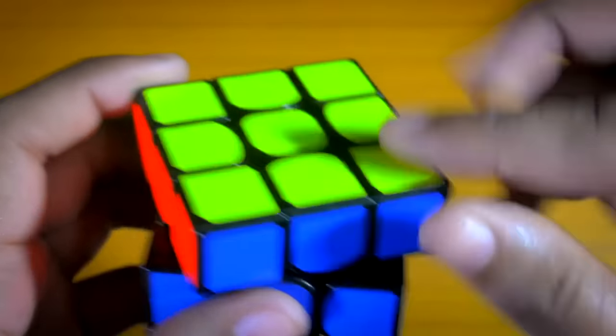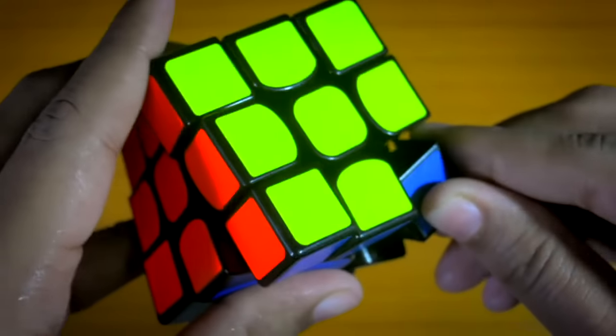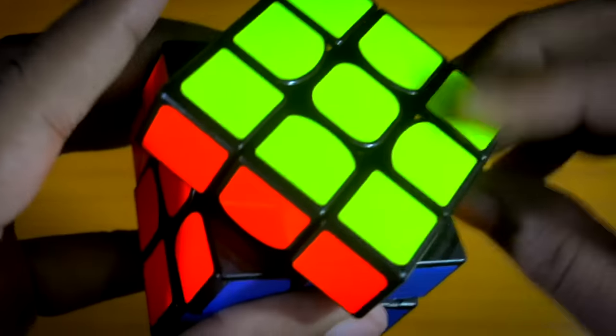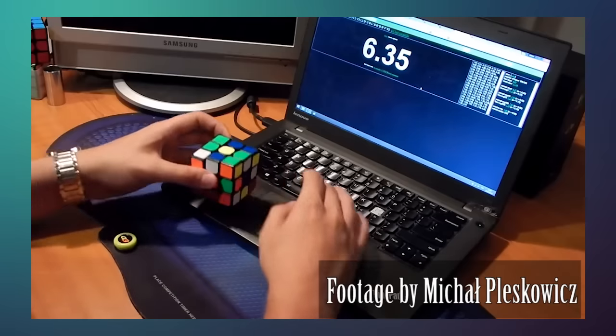Overall, the cube is great and definitely at the top as of now. I really like the M slice of the Valk and as a result I use it as my Roux main. For CFOP, I still prefer my Gan Air.